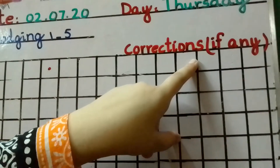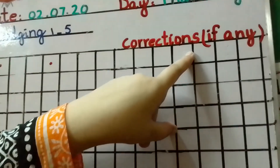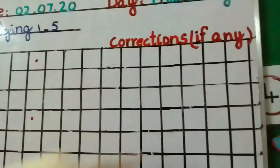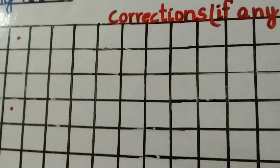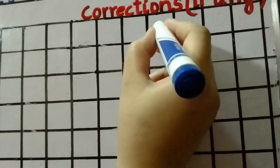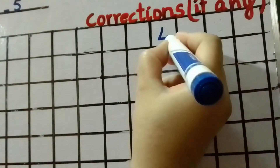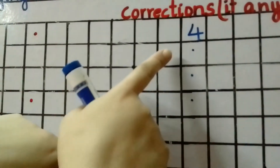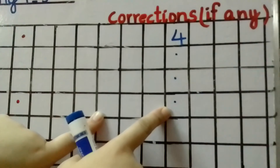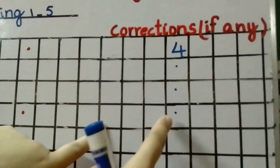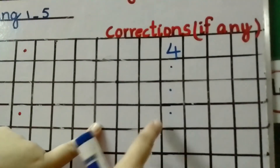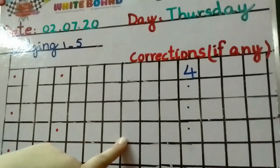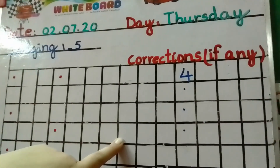If your child made any mistake — suppose if they wrote number 4 incorrectly — please write number 4 here with correct formation and make them write that number 3 times. And that's it. Thank you. Allah Hafiz. See you tomorrow with a new topic.